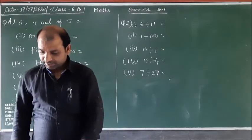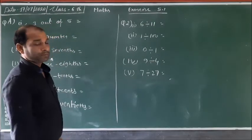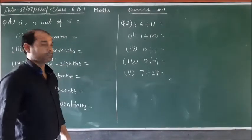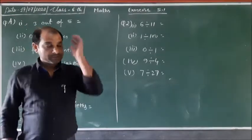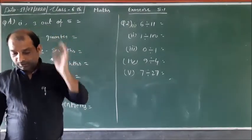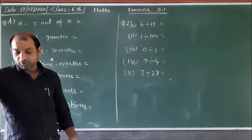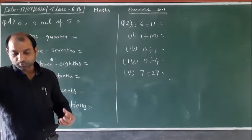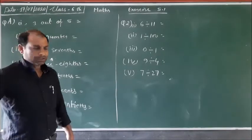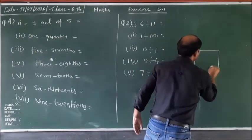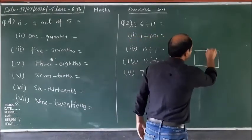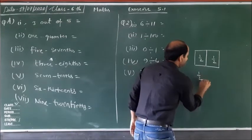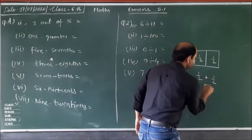Good morning. Today we start Exercise 5.1 of Classics, and this chapter is on fractions. In the last video, Exercise 4.3 was completed. So dear children, fractions are equal parts of a whole thing. If one whole thing is divided into two equal parts and one part out of these two parts is taken — for example, this is one box divided into two equal parts — that gives us one upon two, and one upon two is a fraction.